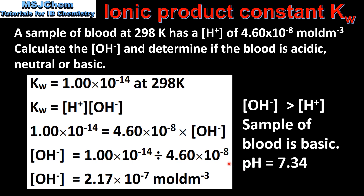Taking the negative log of the hydrogen ion concentration gives a pH of 7.34 at 298 K. That's all from this video — don't forget to check the video description for a link to a practice worksheet.